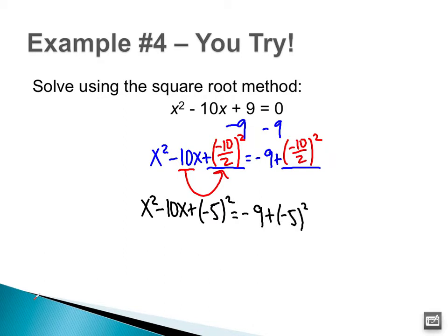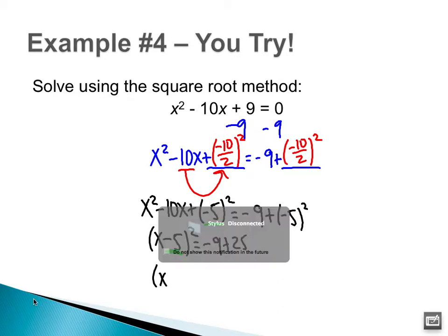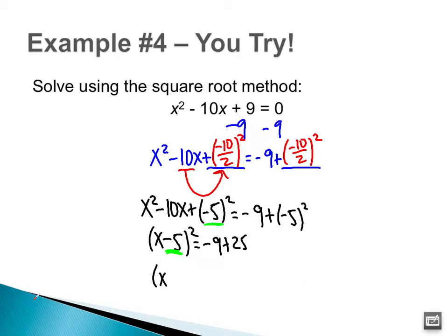The left side of the equation is ready to be factored: (x − 5)². Remember that this negative 5 comes from that negative 5. That equals −9 + 25, so x² − 5x squared is equal to — I'm left with (x − 5)² = 16.